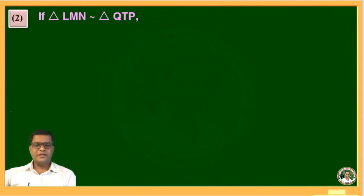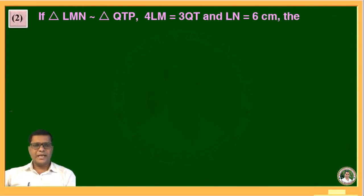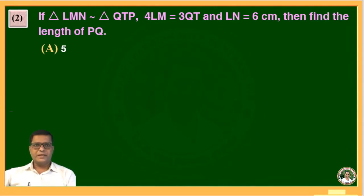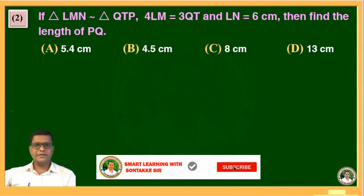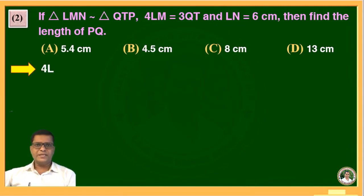The second statement is: if triangle LMN is similar to triangle QTP, and 4LM is equal to 3QT, and LN is equal to 6 cm, then find the length of PQ. Options are: A is 5.4 cm, B is 4.5 cm, C is 8 cm, and D is 13 cm.